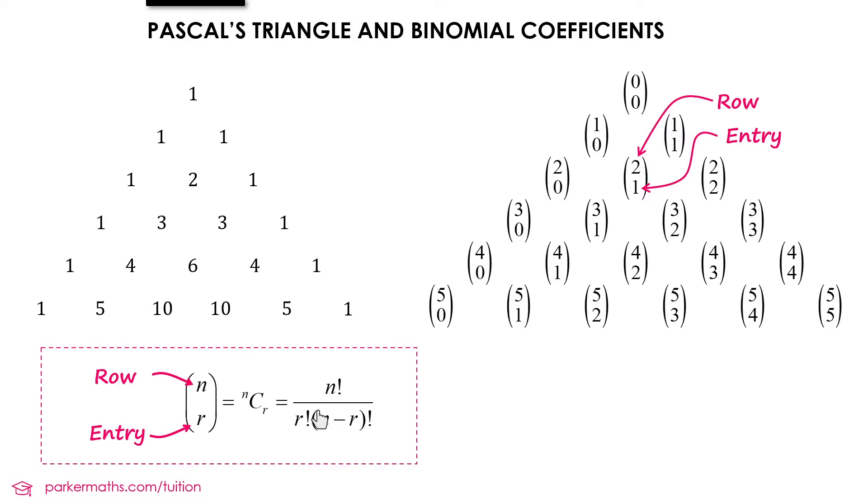And it equals n factorial divided by r factorial times n minus r factorial, where n is the row in Pascal's triangle you're looking for, and r is the entry, both of those starting from 0 if you want to count up.